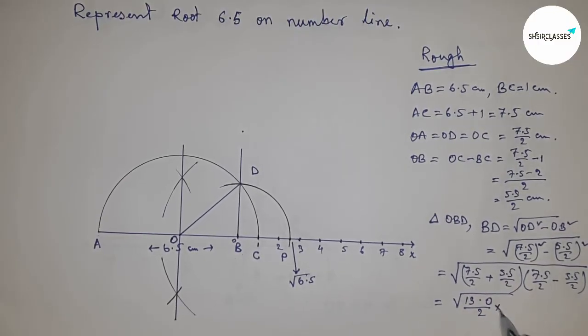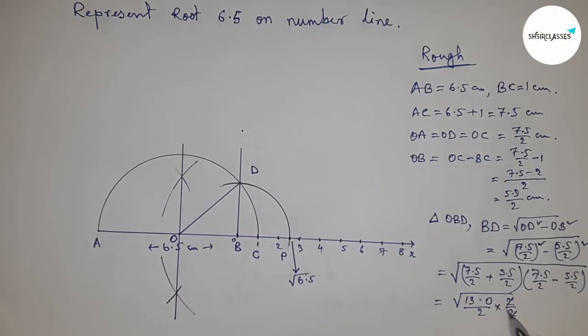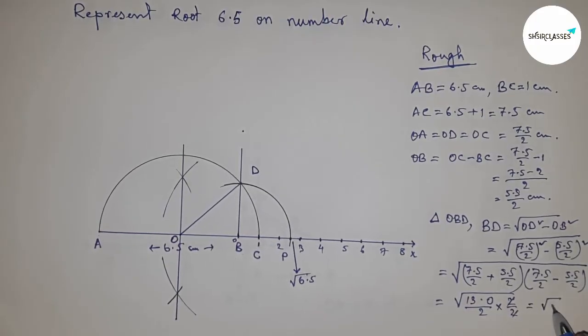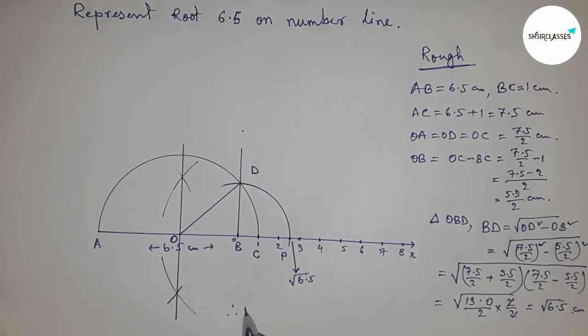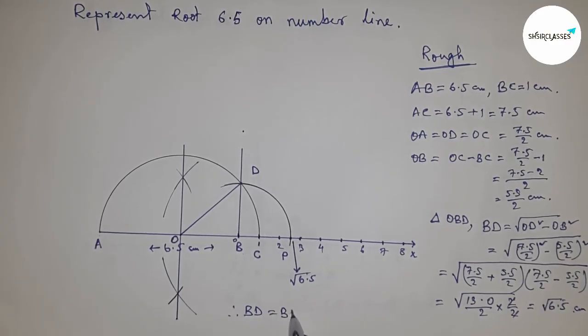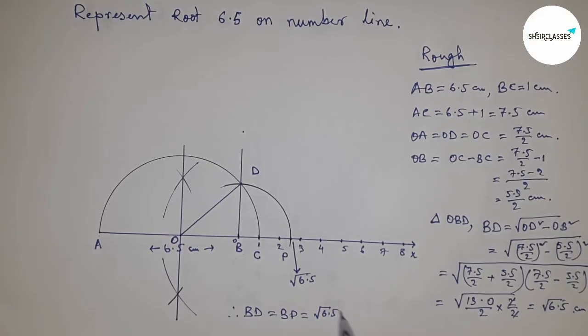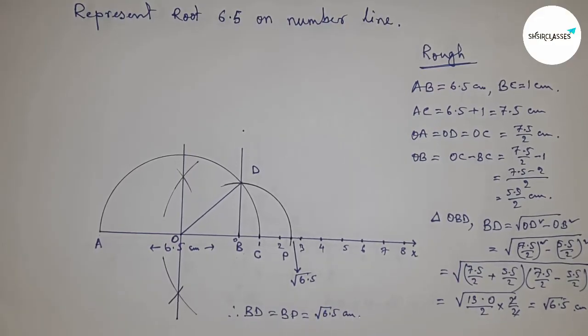Therefore, BD equals root 6.5 centimeters. So BD equals BP equals root 6.5 centimeters. That's all, thanks for watching. Please subscribe to the channel and like and comment on my video.